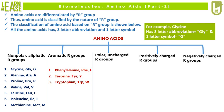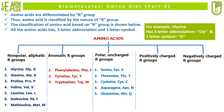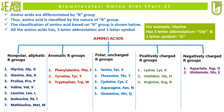Phenylalanine, tyrosine, and tryptophan are categorized under amino acids with aromatic R groups. Serine, threonine, cysteine, asparagine, and glutamine are categorized under amino acids with polar uncharged R groups. Lysine, histidine, and arginine are categorized under amino acids with positively charged R groups. Aspartate and glutamate are categorized under amino acids with negatively charged R groups.